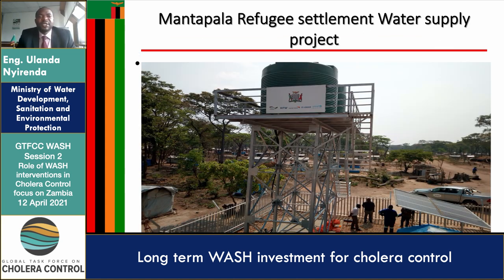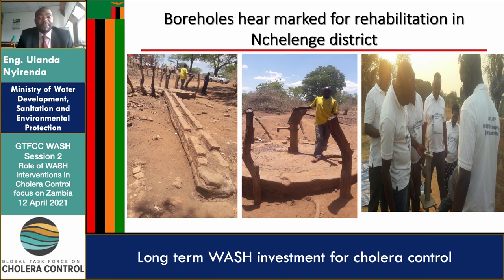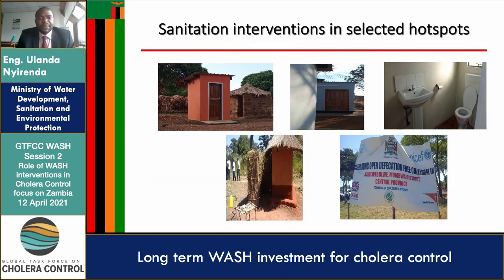In Nchelenge we have the large Mantapara refugee settlement, where refugees from the Democratic Republic of Congo come into Zambia. Since cholera is present in both DRC and Zambia, we have ensured water and sanitation facilities are established there, with support from the German government, UNICEF, and the Government of Zambia. We are also undertaking rehabilitation of non-functional boreholes in Nchelenge and other places — you can see a dilapidated borehole on the left, and a technical team working on rehabilitation on the right.